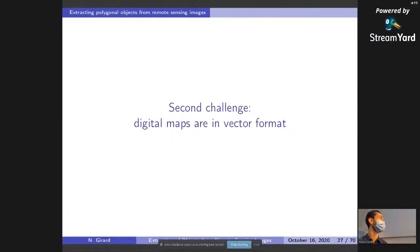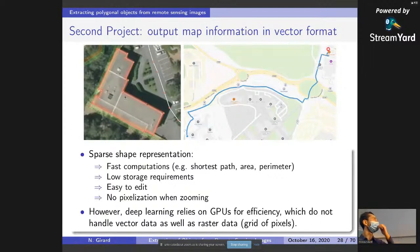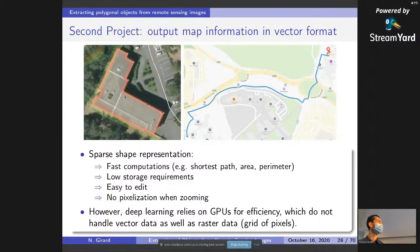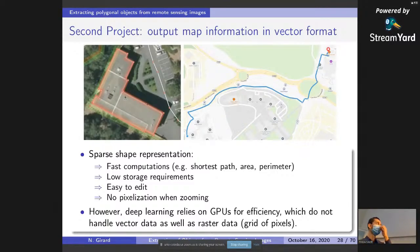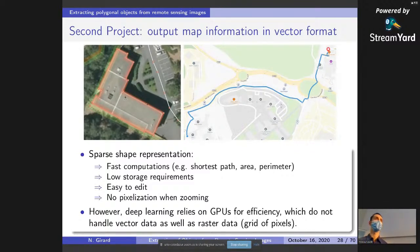Now we move on to the second challenge: digital maps are in vector format. We can see examples of digital maps on screen. The vector format is a sparse shape representation allowing fast computation of shortest paths, area, and perimeter, with low storage requirements, easy editing, and no pixelization when zooming. However, deep learning uses GPUs which handle raster data — essentially a grid of pixels — much more efficiently than vector data, making convolution operations straightforward on raster but not on vector data.